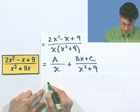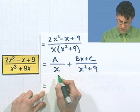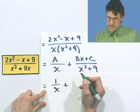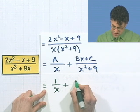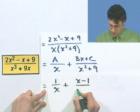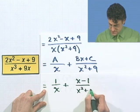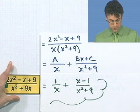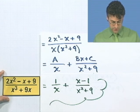All right. This equals, well, a is 1. So I just have 1 over x plus, and the b is, remember, 1. So it's just going to be x. And the c is negative 1 minus 1 all over x squared plus 9. And there I have the partial fraction decomposition for this crazy-looking rational function.